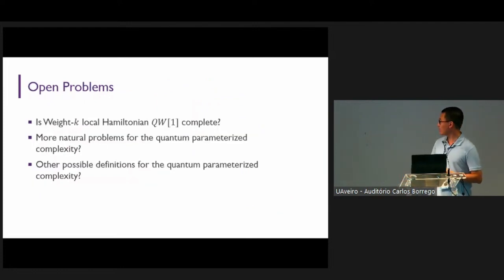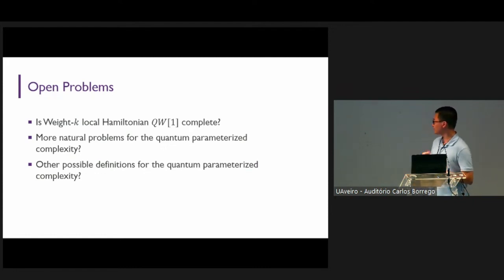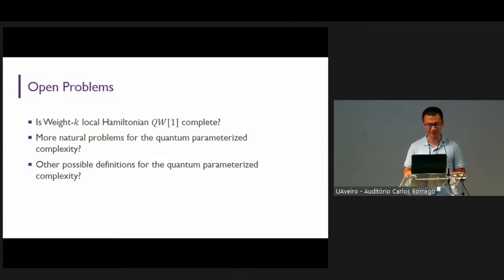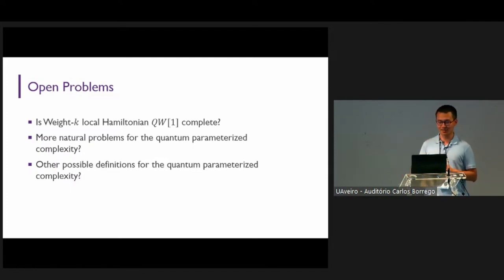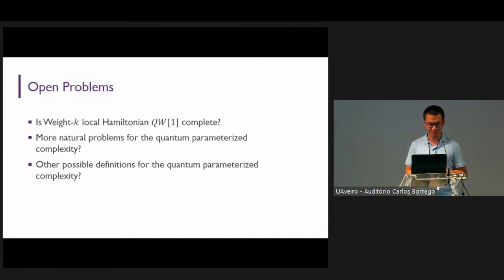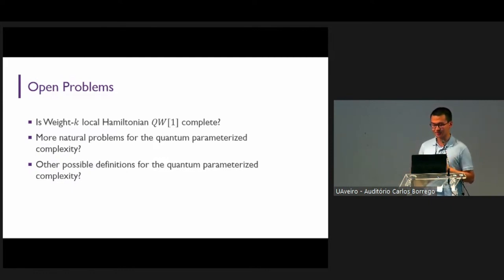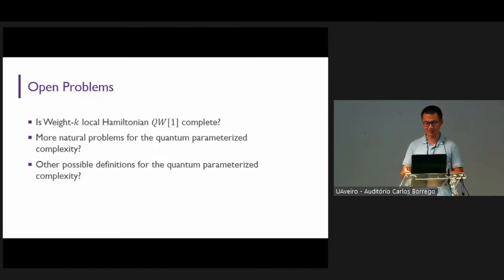There are many open problems in this area, since it is a brand new area. The first problem is whether the weight-k local Hamiltonian is QW[1]-complete — we tried to prove that but failed due to many technical problems. Are there more natural problems for quantum parameterized complexity, since the weight of a quantum state definition might seem artificial? And are there other possible definitions for quantum parameterized complexity beyond what we generalized from the classical version? We hope you will be interested and provide new results in this area.